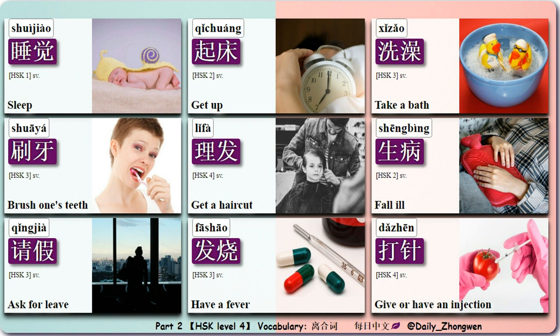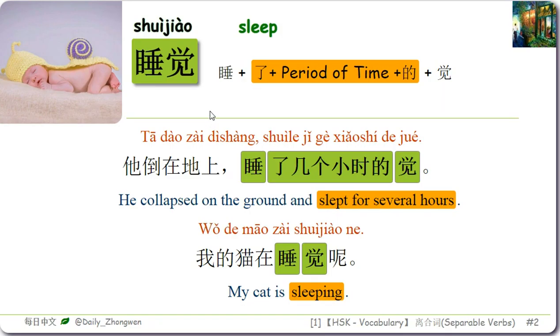HSK Level 4 Vocabulary 离合词 Part 2. In this lesson, we will continue our study on separable words 离合词.